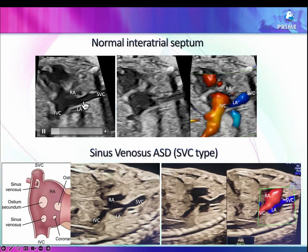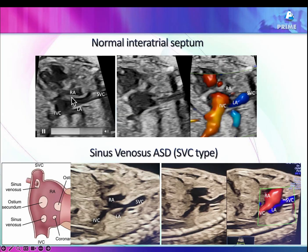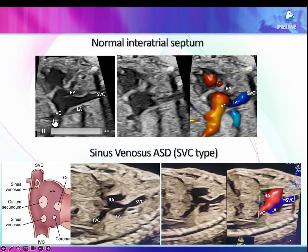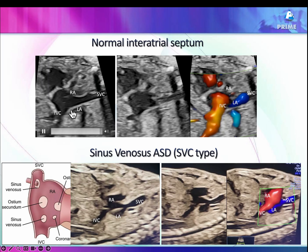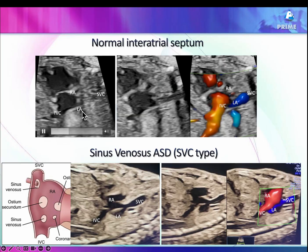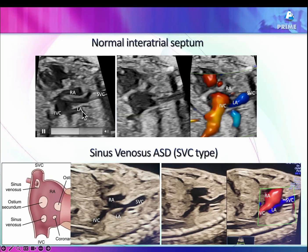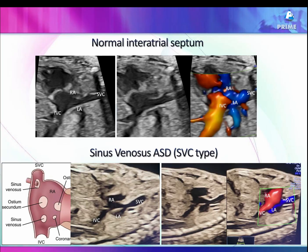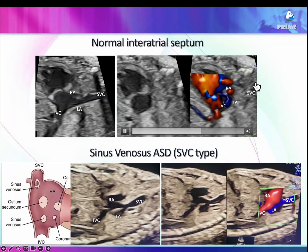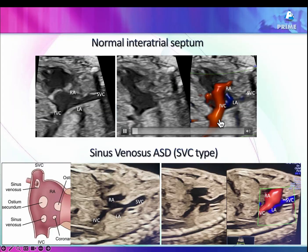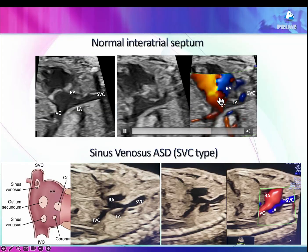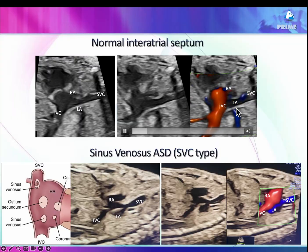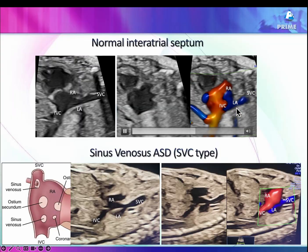Before showing an uncommon type of ASD, let me show you normal anatomy. In the bicaval view, you see the left atrium, right atrium, superior vena cava, inferior vena cava, and the inter-atrial septum. The left atrium appears small here due to angulation. You see flow from the SVC and IVC going into the RA and then RV, with no flow across the inter-atrial septum.